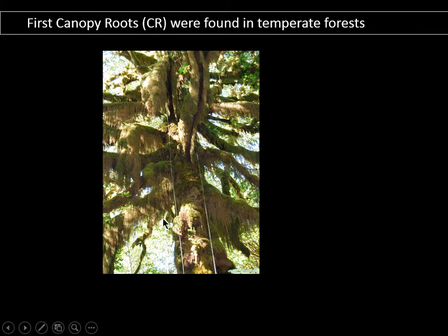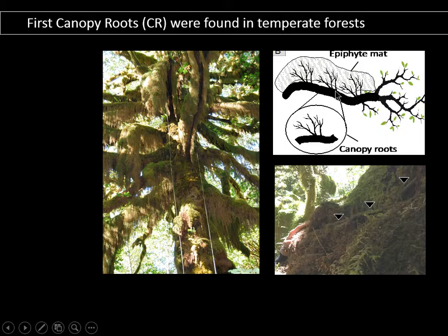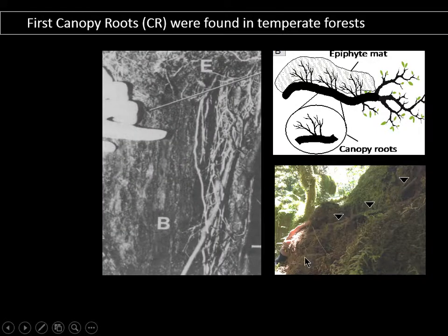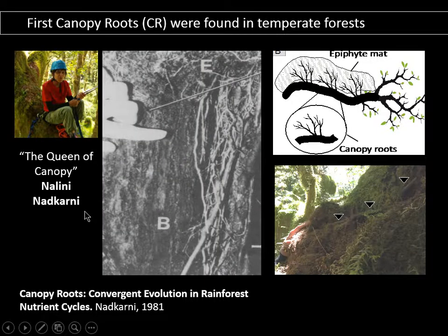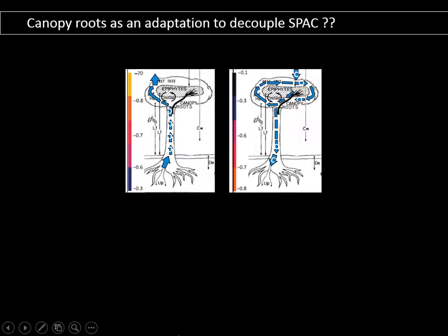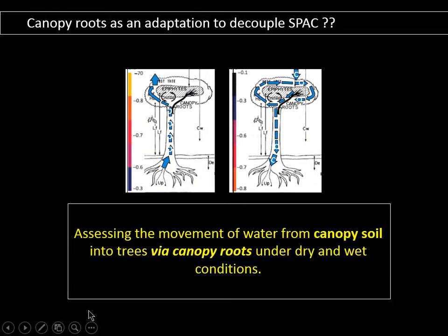These canopy roots are growing underneath the canopy soil on the big-leaf maple tree. These roots were discovered by Nalina Tkarni, also known as the Queen of Canopy, because of her canopy research. She discovered these roots in 1981, and since then there has been little research about them. My question is assessing whether these roots are active — can they uptake water and nutrients, and maybe redistribute that water and nutrients at the canopy level, and eventually decouple or at least alleviate, under dry conditions, the tree from the soil underground.